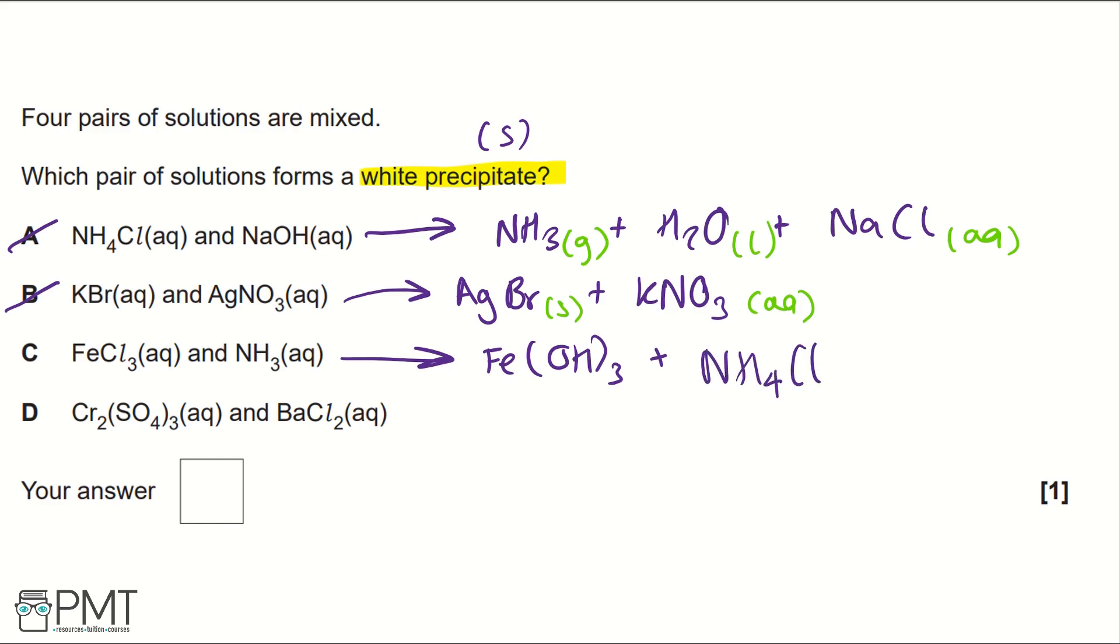If we write the state symbols, both are aqueous. We form these products because our reactants are an aqueous solution, that means they're going to be dissolved in water. So we would form these products, but both are aqueous, so neither are precipitates, so we can eliminate C.